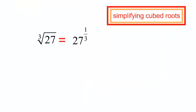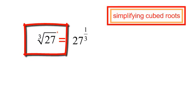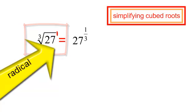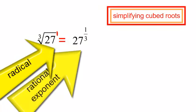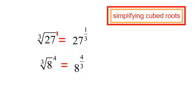I want you to get used to the notation. The cube root of 27 to the 1st is the same thing as 27 to the 1 third — this is written with a radical, this is written with a rational exponent. The cube root of 8 to the 4th is equal to 8 to the 4 thirds.